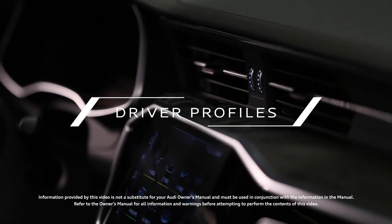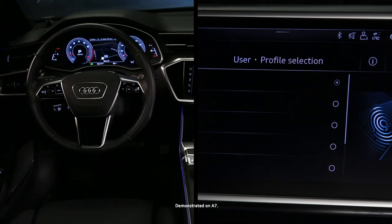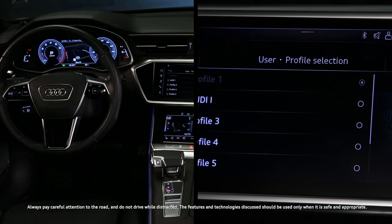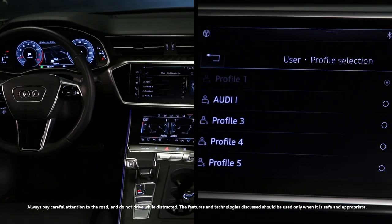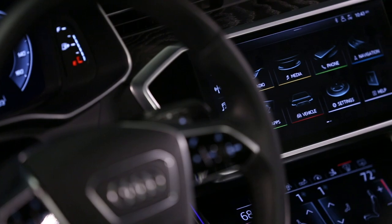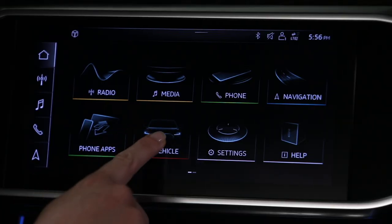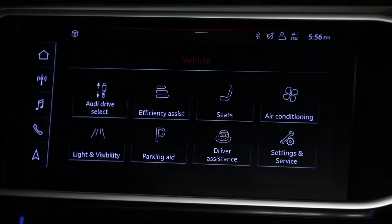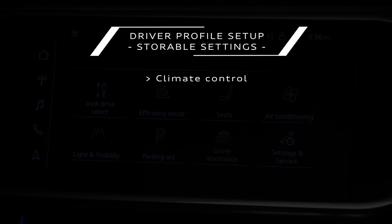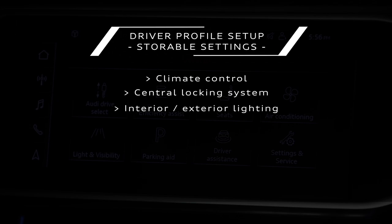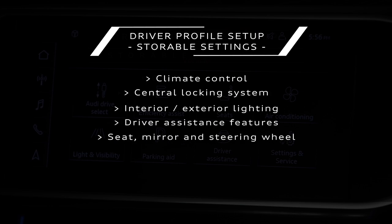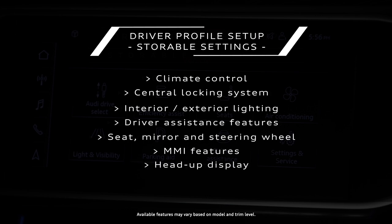Available driver profiles retain memory settings to provide a tailored experience for each driver. Before setting a profile, adjust or select all of the variables to be saved. These features may include climate control, the central locking system, interior and exterior lighting, driver assistance features, seat, mirror and steering wheel position, MMI features, the heads-up display, and the instrument cluster layout.